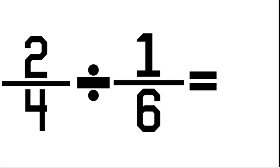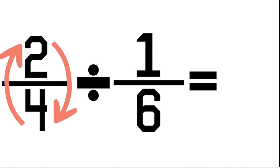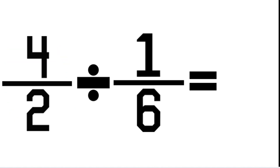Let's work through an example together. Two quarters divided by one sixth. First we're going to flip our first fraction upside down. So we're going to change two over four to become four over two. We've flipped it upside down. We're then going to change our division sign from divide to times.